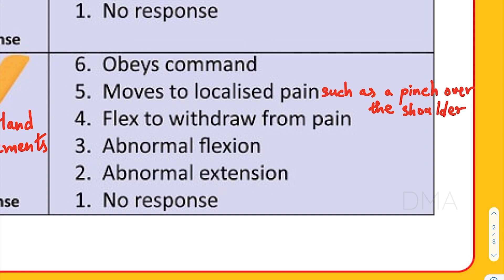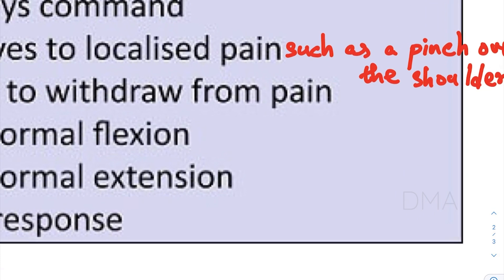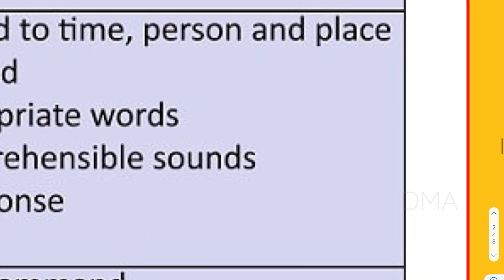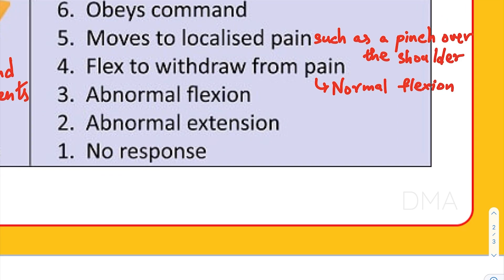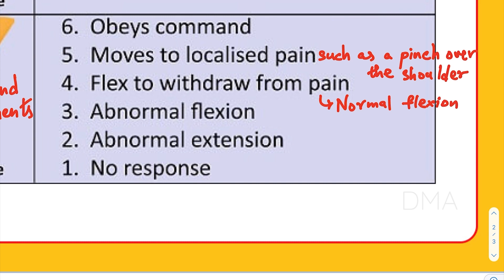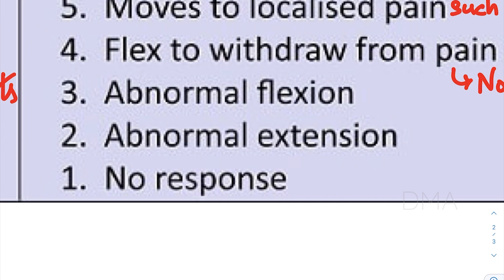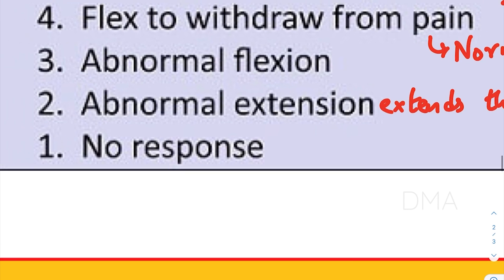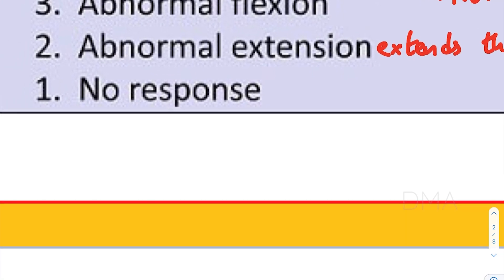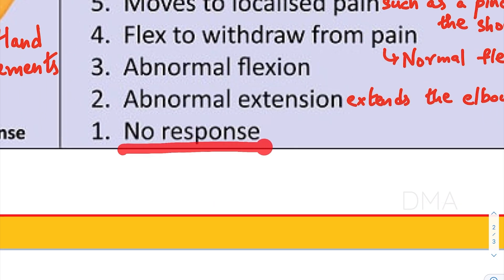If the patient flexes his arm to withdraw from the pain — moving his arm away from the body and away from the pain — we give him a score of four. If there is abnormal flexion, where the patient slowly bends his arm across the body in response to the same stimulus, we give him a score of three. If the patient shows abnormal extension — slowly extending his elbow — we give him a score of two. If the patient makes no response at all to pain stimuli, we give him a score of one.